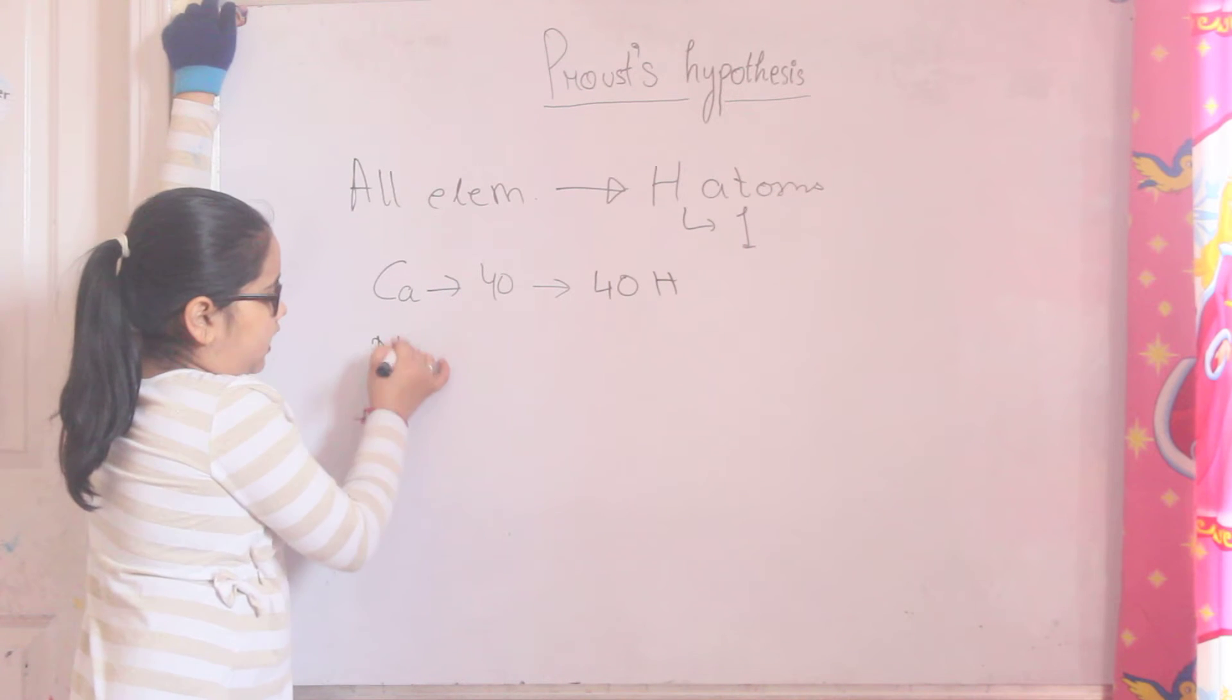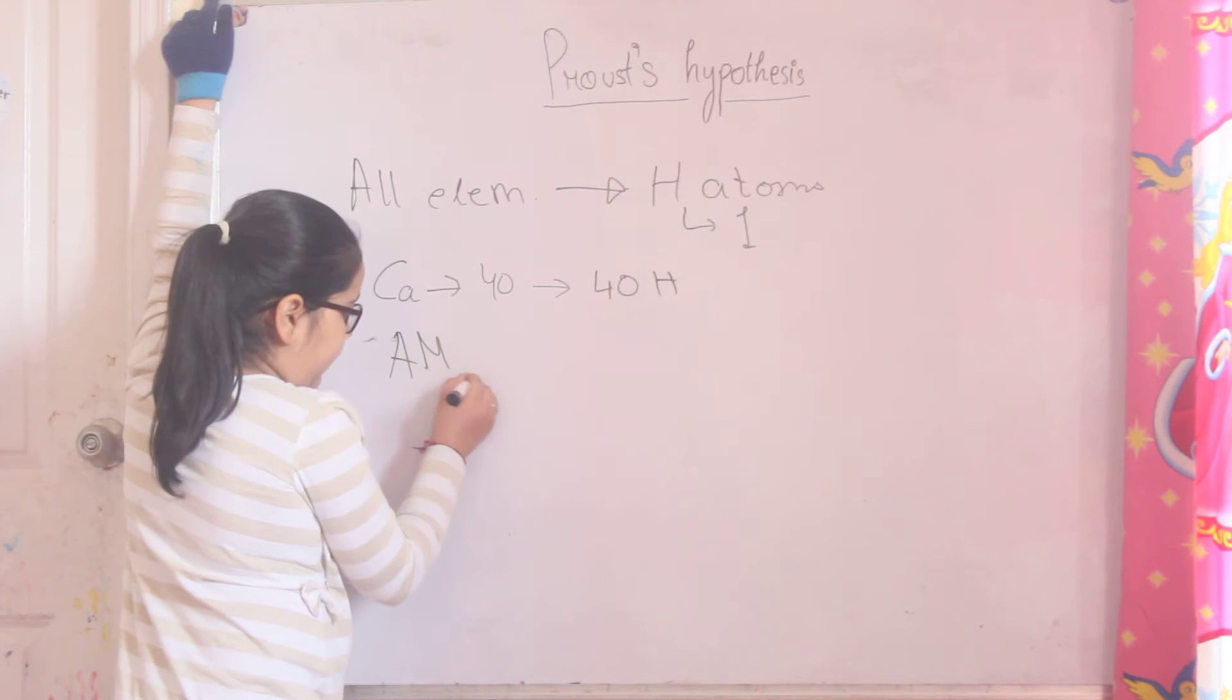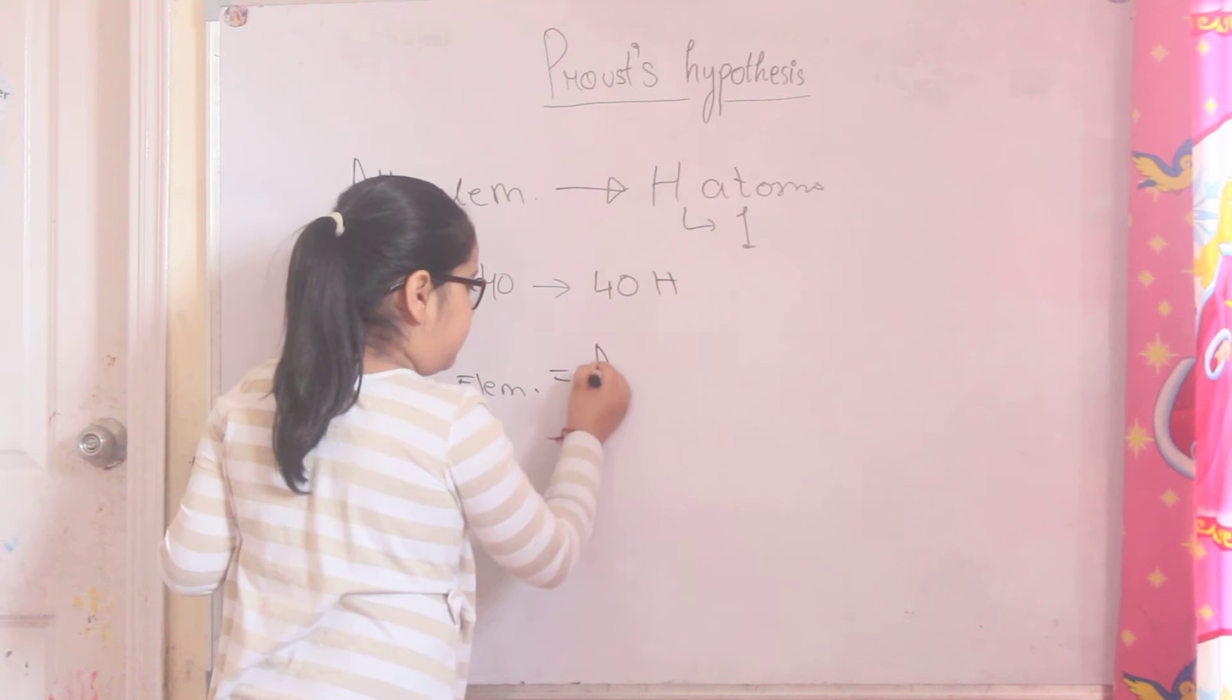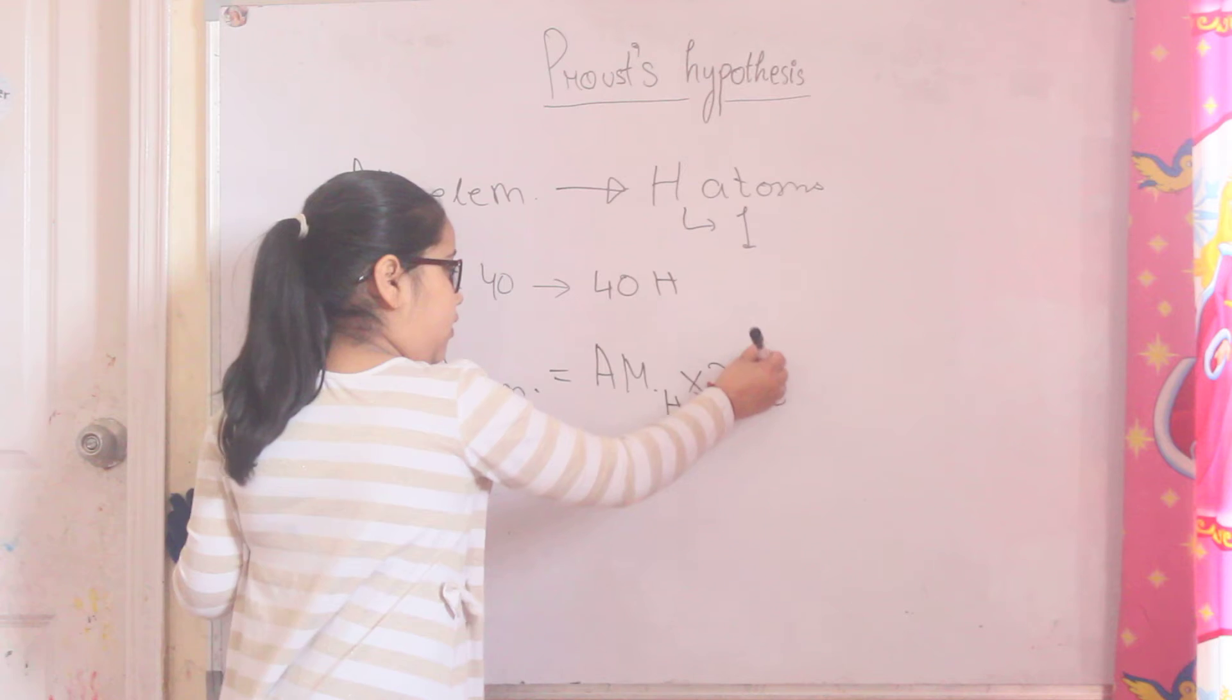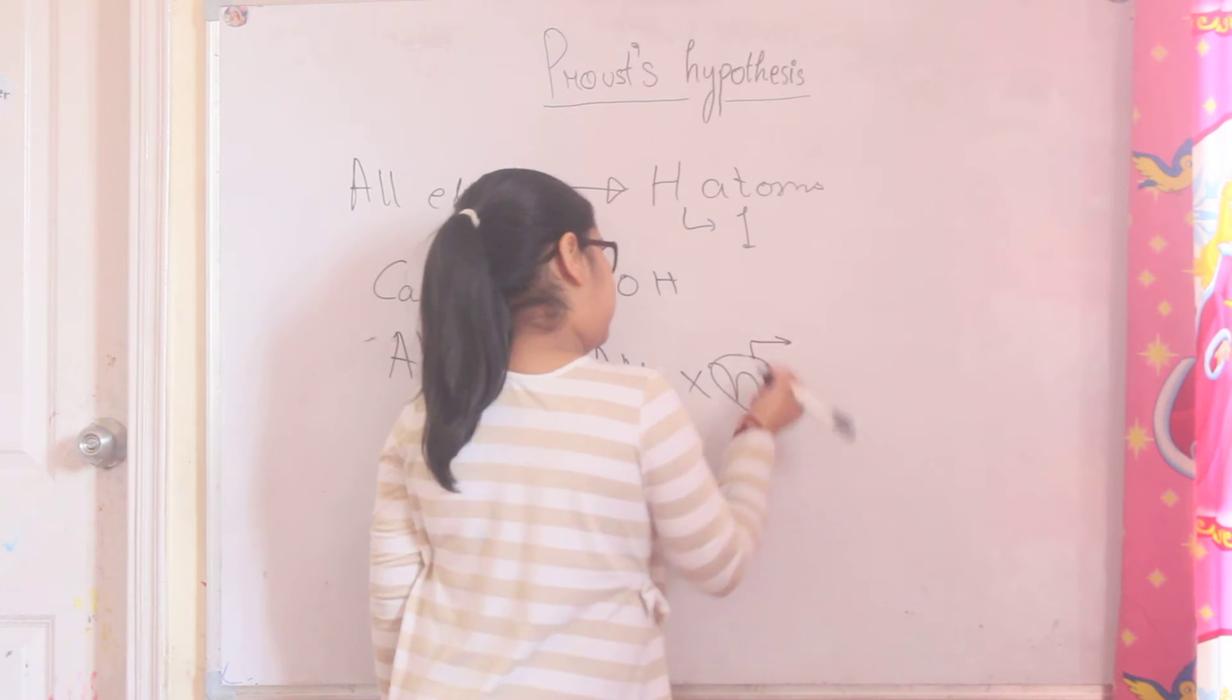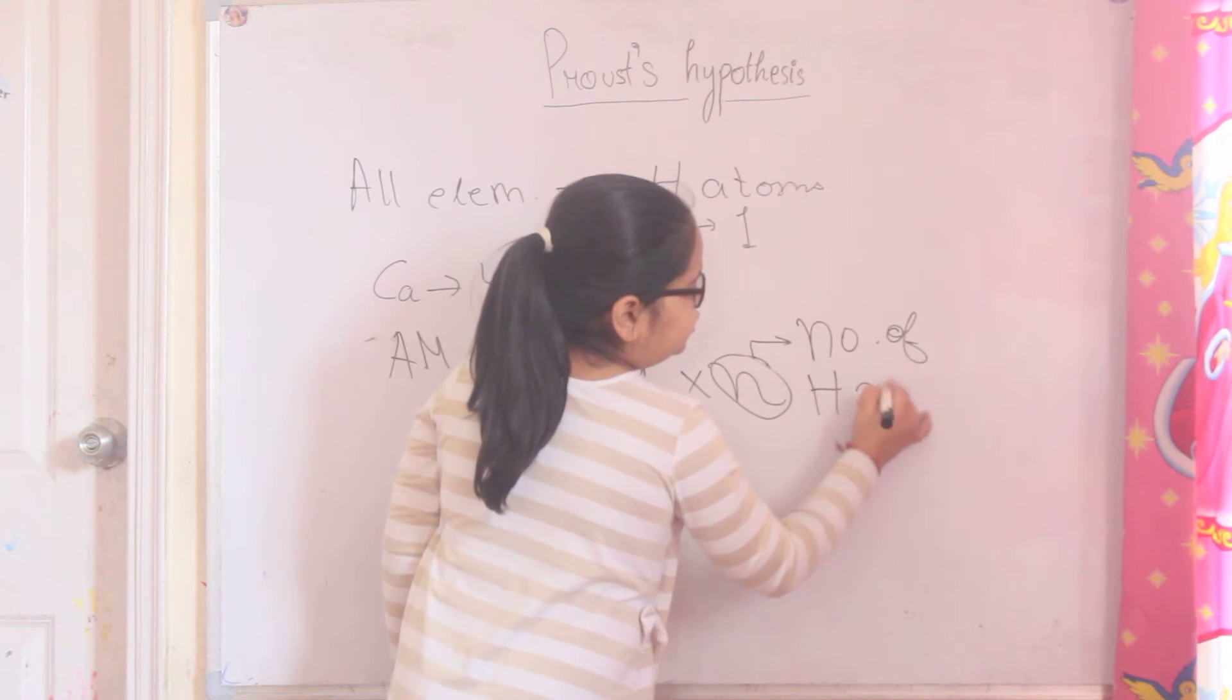You can say that atomic mass of elements is equal to atomic mass of hydrogen into n. And what is n? N is number of hydrogen atoms.